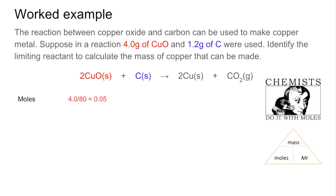So mass over MR gives us 0.05 moles of copper oxide and just a word of warning here whatever you do don't double the MR of copper oxide. The MR of copper oxide is 80 and so if we've got four grams doesn't matter what numbers in front in the equation we've got that many moles. Do the same for carbon we've got 0.10 moles of carbon.